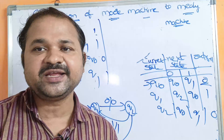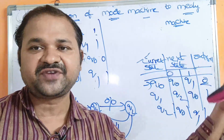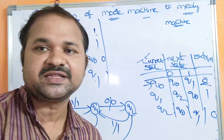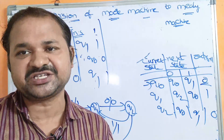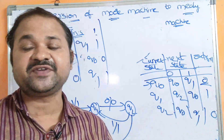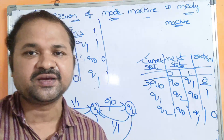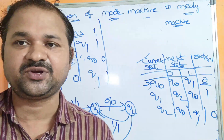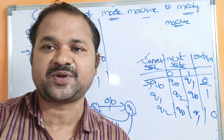In the examination, a transition diagram may be given — if a transition diagram is given, then the output should be the Mealy machine transition diagram. Whereas if a transition table is given, then the output should be the Mealy machine transition table. In this way, we can solve this problem.